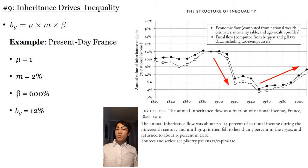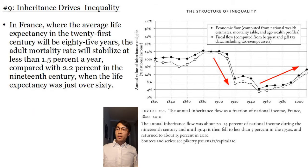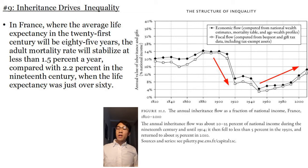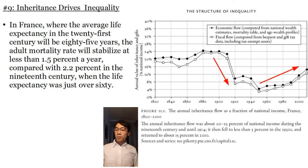In France, where average life expectancy in the 21st century will be 80 to 85 years, the adult mortality rate will stabilize at less than about 1.5% a year compared with 2% in the 19th century, when life expectancy was just over 60. The increase in the average age of death increases the average age of heirs at the moment of inheritance. In the 19th century, the average age of inheritance was about 30, whereas in the 21st century it will be somewhere around 50 — helping to explain why wealth inheritance drives wealth inequality in modern times.